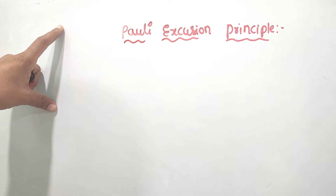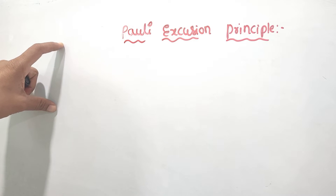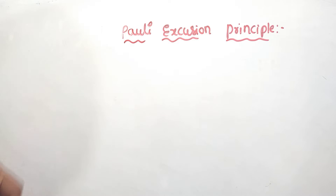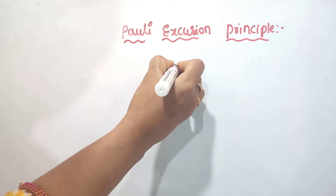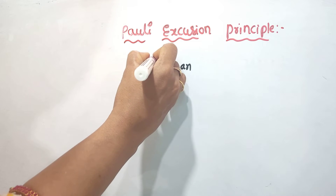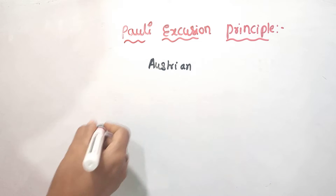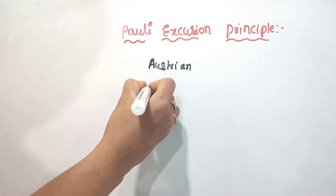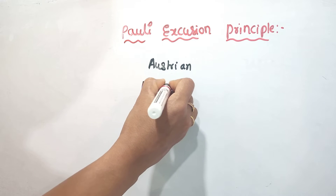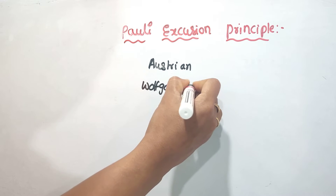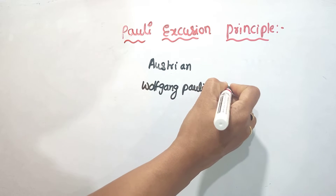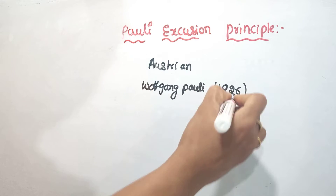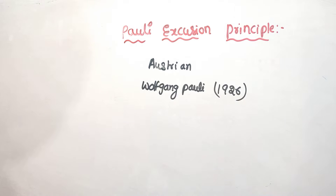Hi, hello everyone. Welcome to Chemistry Biksuchi. Today we are going to discuss about the Pauli Exclusion Principle. Pauli is an Austrian scientist. His name is Wolfgang Pauli. In 1926, he gave this Pauli Exclusion Principle.